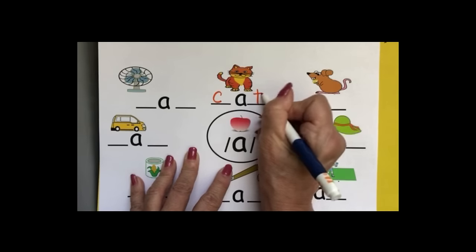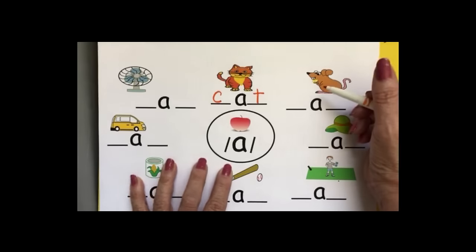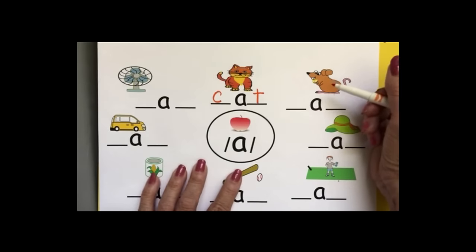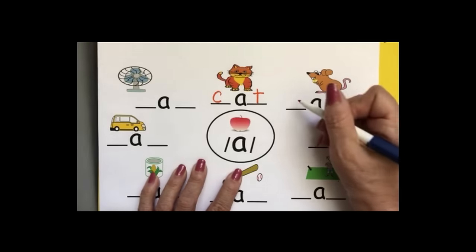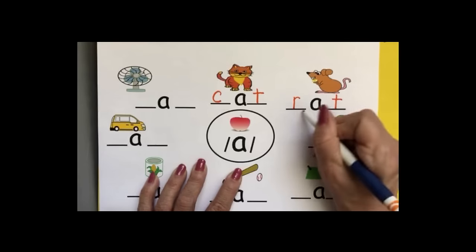T, t, you hear a T at the end. This is a cute little guy eating some cheese. He is a rat, r, a, t, rat.